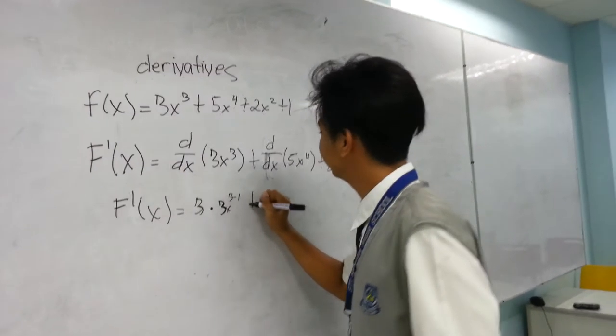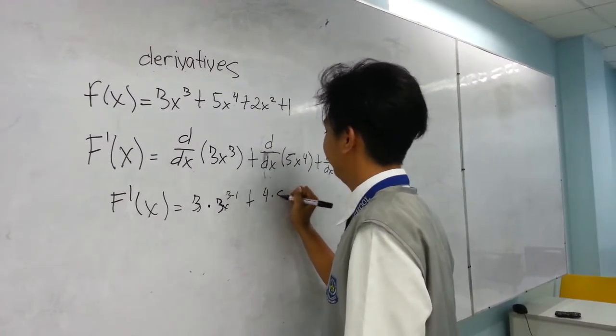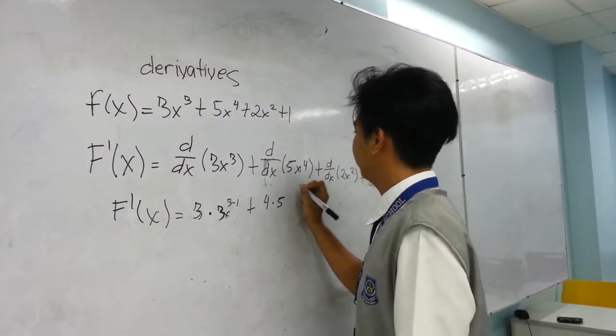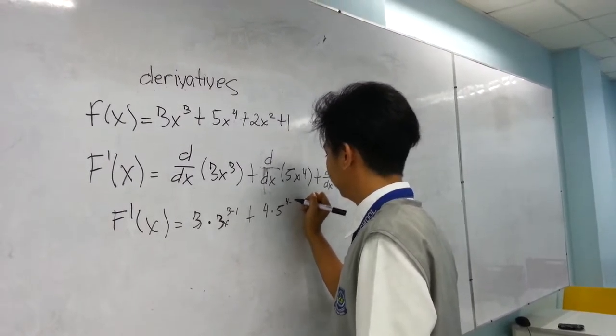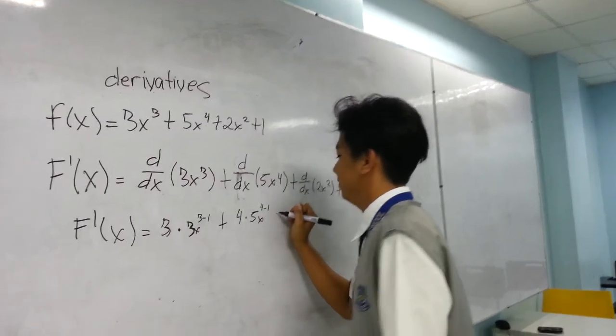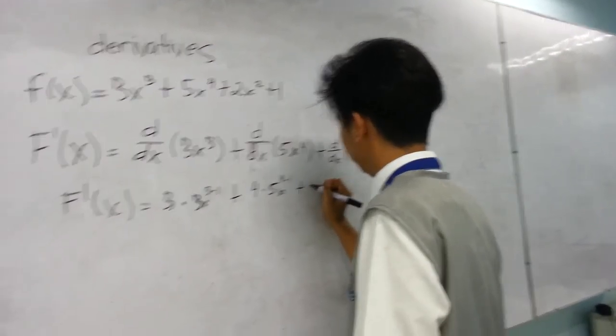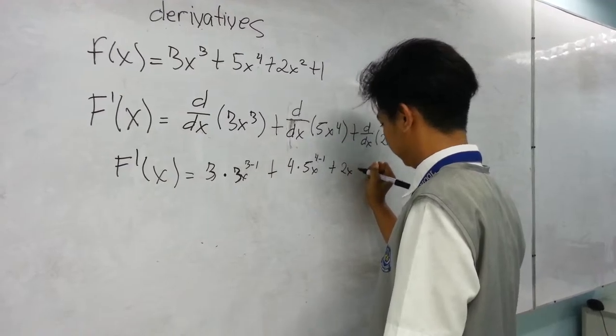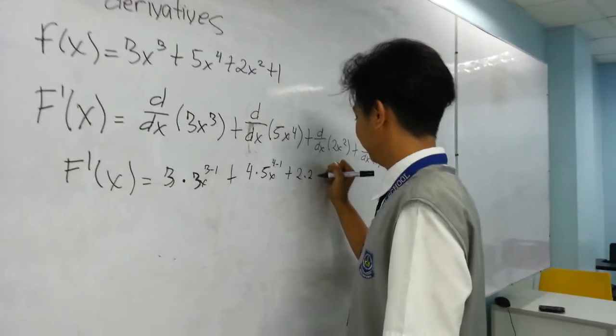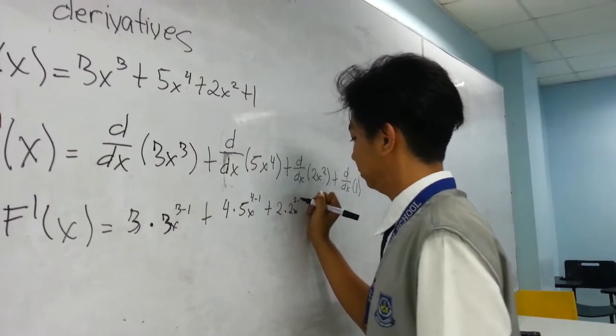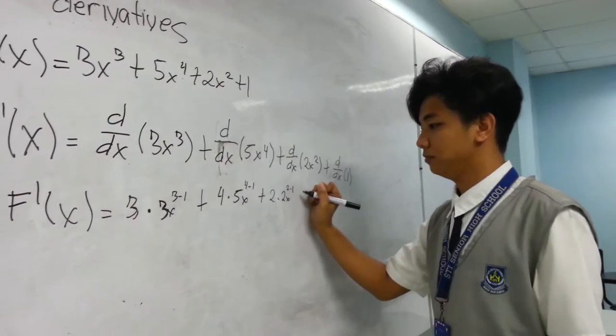Plus 4 times 5, 4 times 5x raised to 4 minus 1, plus 2 times 2 raised to 1 minus 1, plus 0.